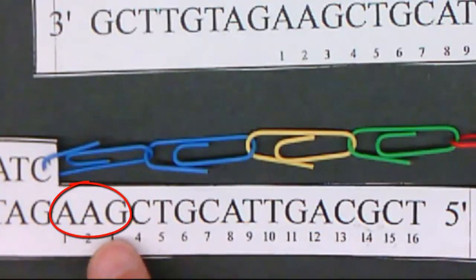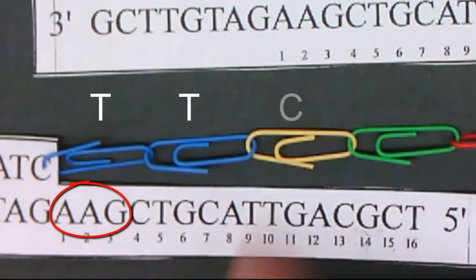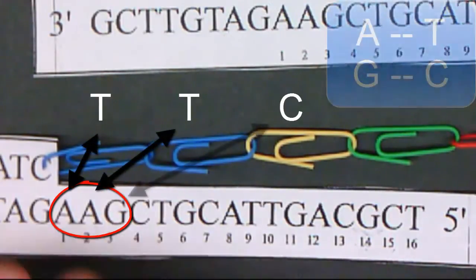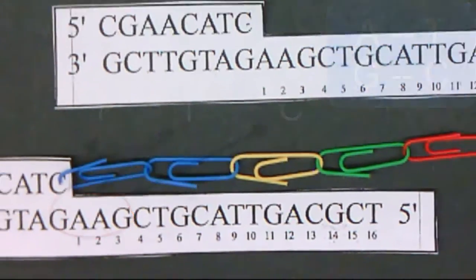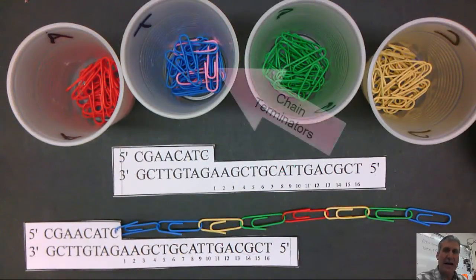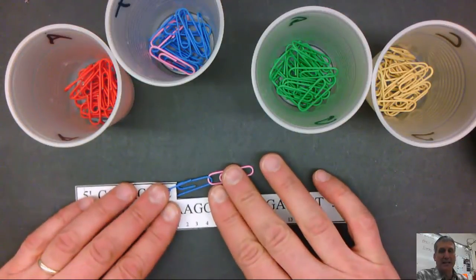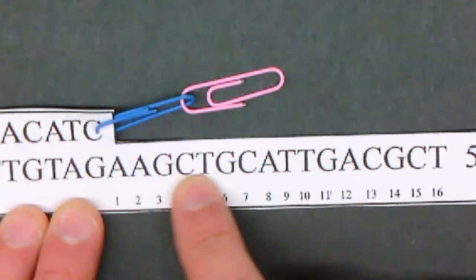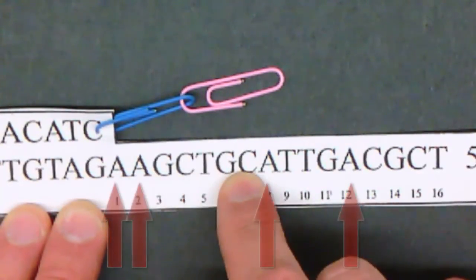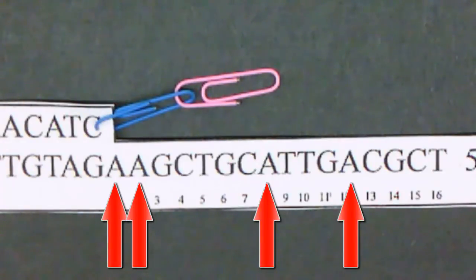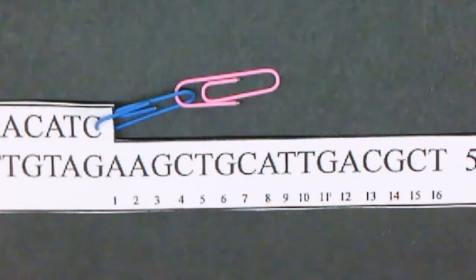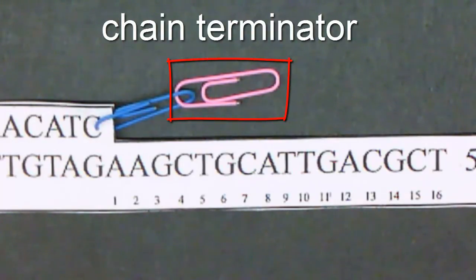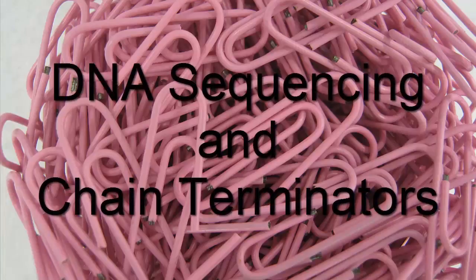So I have AAG on the template strand, and the other strand would be TTC — you can see how they are complementary. This is modeling DNA replication. Now we are adding the extra element of having the pink chain terminators. If my T cup is spiked, I have the possibility of terminating the replication process everywhere that there is an A. You are going to do this 4 times with your cups, going through the replication process but stopping if you pick a chain terminator. I hope that helps you stay comfortably seated on the Biotrain.